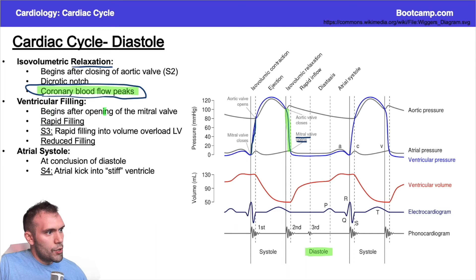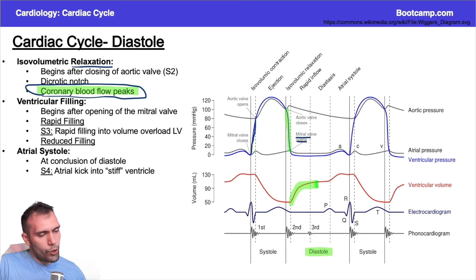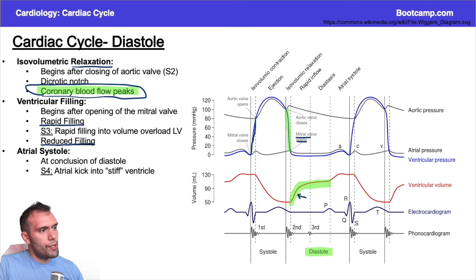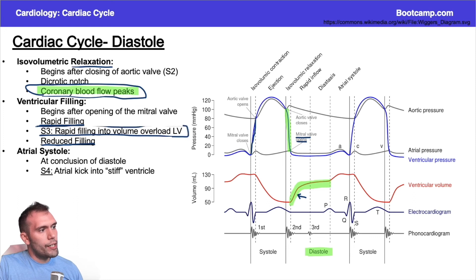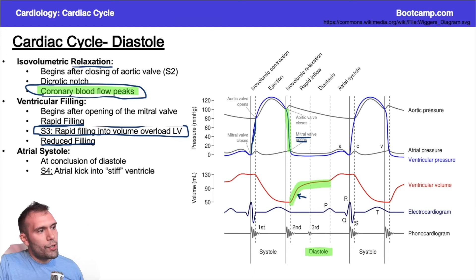Ventricular filling begins after the mitral valve opens. You can see the volume in the left ventricle starting to rise. Initially there's a rapid filling phase, just like with ejection, and then a reduced filling phase. The S3 heart sound happens in early diastole during early filling, when blood moves rapidly into the left ventricle, causing the S3 gallop as the ventricle starts to fill and there's some tensing of the chordae tendineae.